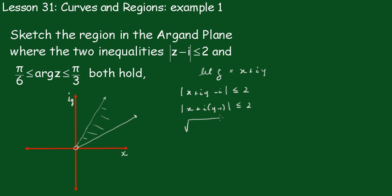Squaring both sides, we get x squared plus (y minus 1) squared is less than or equal to 4. This is a circle with center at (0, 1) and radius 2.